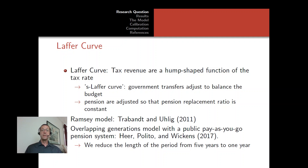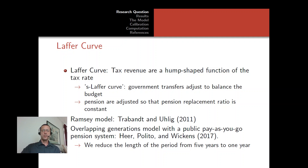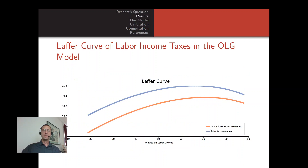To summarize the fiscal rules: extra revenues are redistributed lump sum, pensions adjust so the replacement ratio is constant, and the Social Security contribution rate adjusts to balance the Social Security budget. Our model follows Trabant and Ulich closely but uses the overlapping generations extension from Herr Polito and Wiggins, with annual periods. We find that the Laffer curve for labor income revenues peaks at 71%.